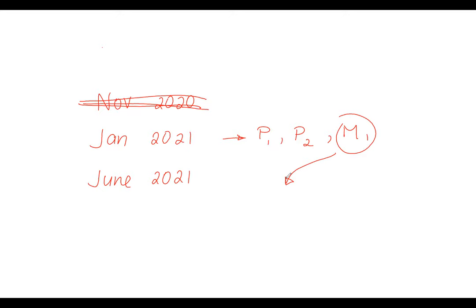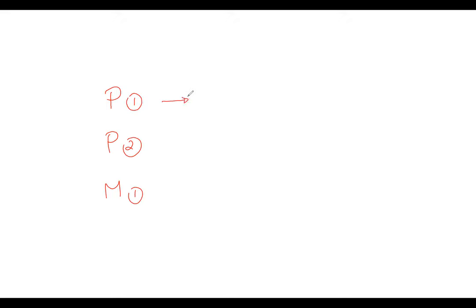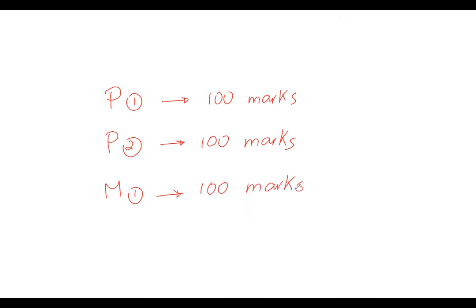يبقى احنا كده خدنا فكرة. تعالوا نتكلم على الـ Grades. لو اتفقنا إن احنا حنعمل P1 و P2 و M1 مثلاً، كل Paper من دول is for 100 Marks. يبقى الـ Total بتاع الـ AS هيبقى Mark out of 300.